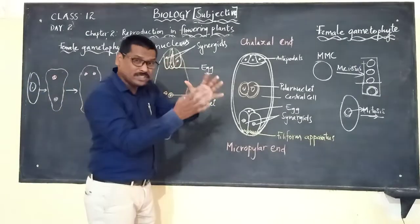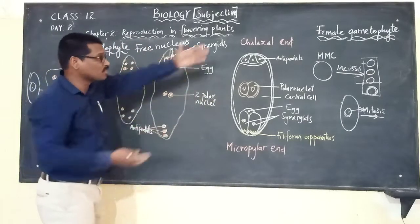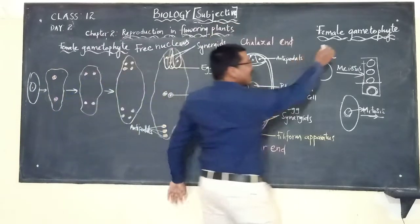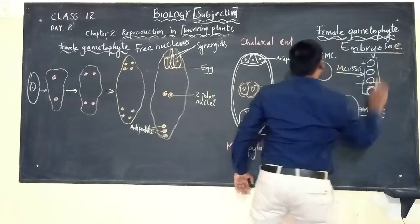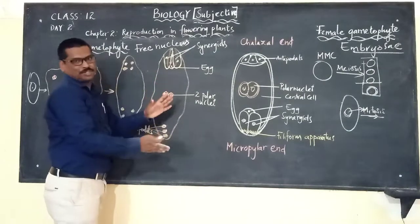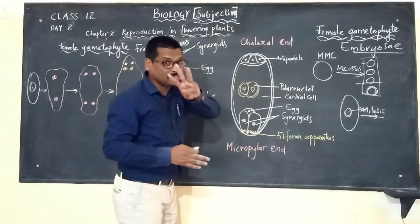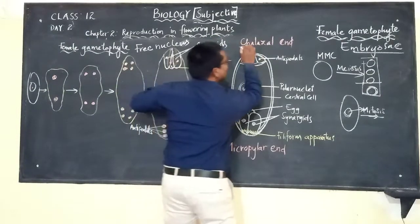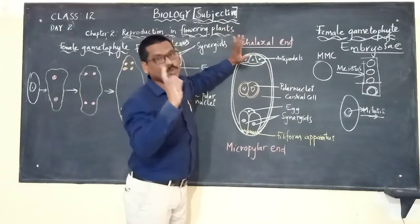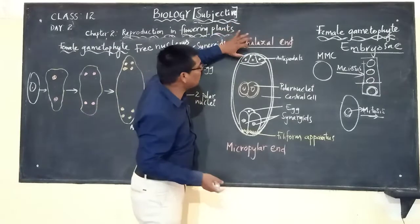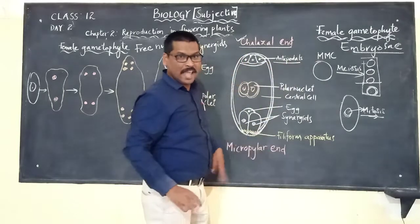The female gametophyte is also called the embryo sac. Totally there are eight nuclei; six nuclei are enclosed by cell walls. Three cells are at the chalazal end — that is the base of the ovule — and are called antipodals.